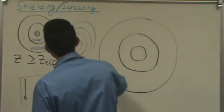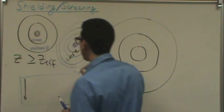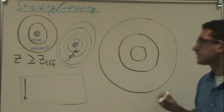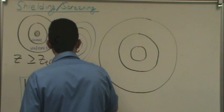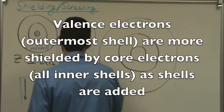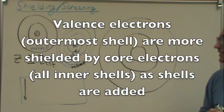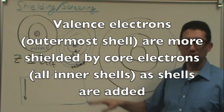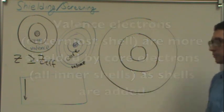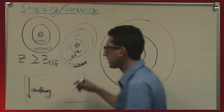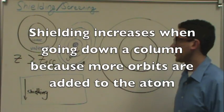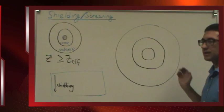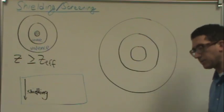And the valence electrons are always represented by the outermost orbit. And you can see now that the valence electrons would be more and more shielded by the core electrons. Shielding increases as you go down the periodic table. Now let's consider as we go across the periodic table.